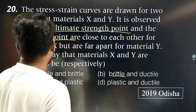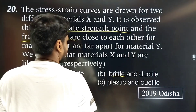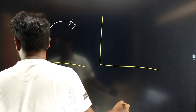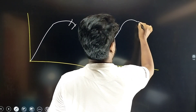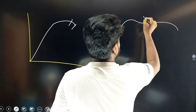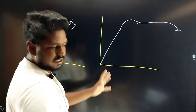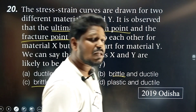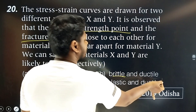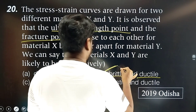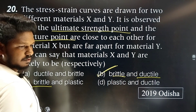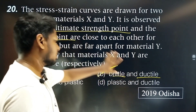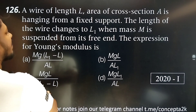If the ultimate strength point and fracture point are far apart in the graph, the material is ductile.